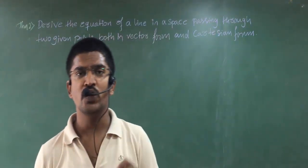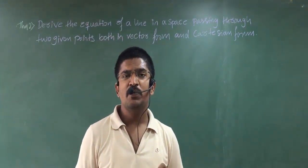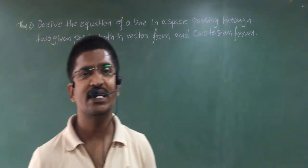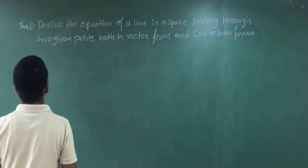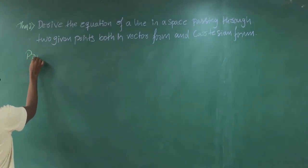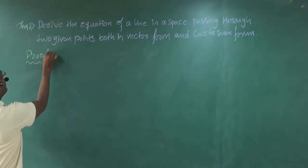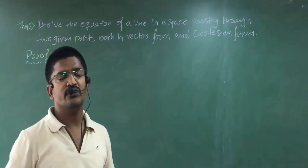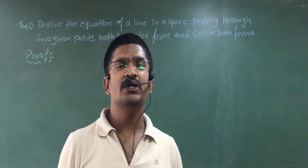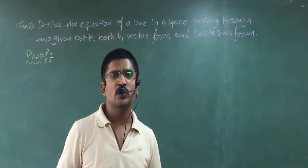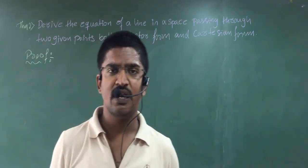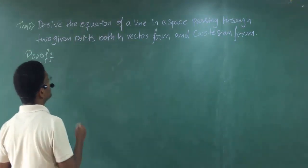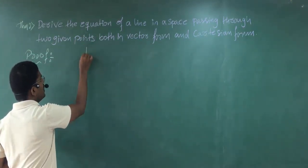Now to derive Theorem 2 — a line passing through two points — let us see the proof. While solving the proof of theorems, the diagram is very important. If the diagram is wrong, you can lose one to two marks. So be very careful while drawing the diagrams of three-dimensional geometry.